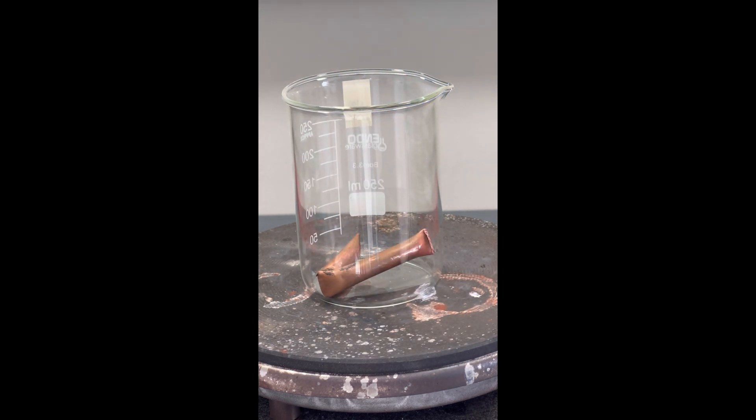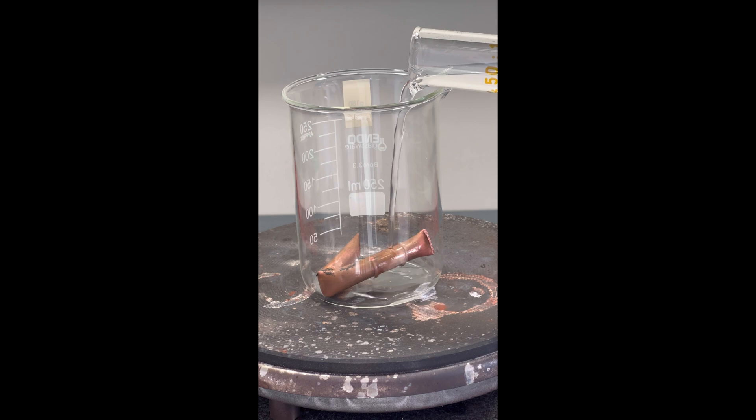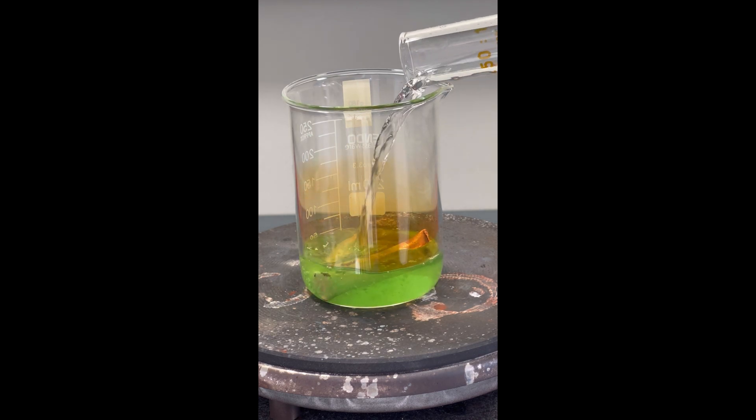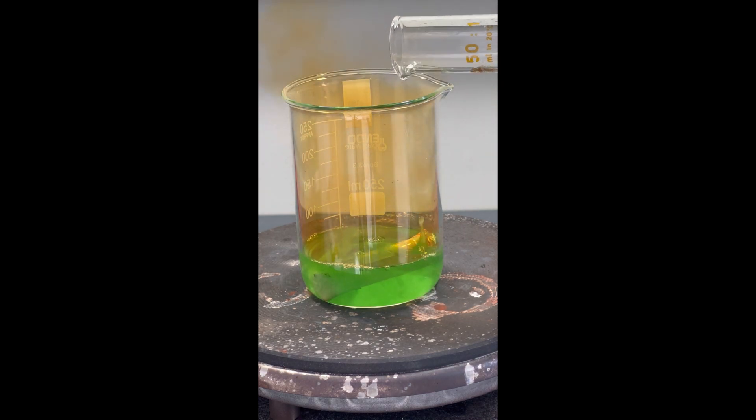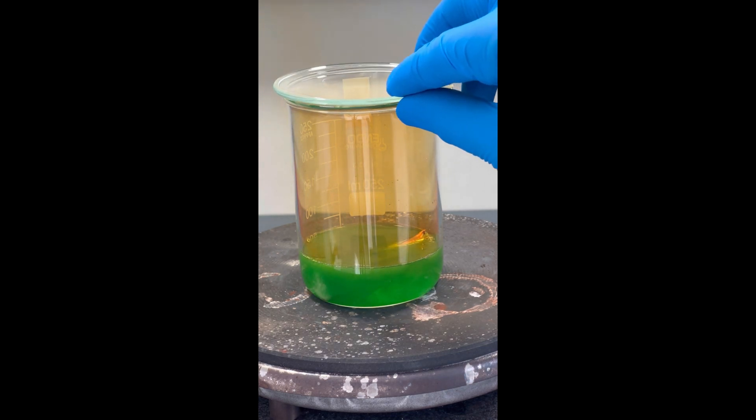To prepare this pigment, we start by creating a copper solution. Approximately 20 grams of copper tubing are placed in a beaker and 50 milliliters of 67% nitric acid are poured over it.